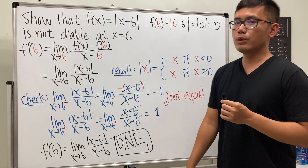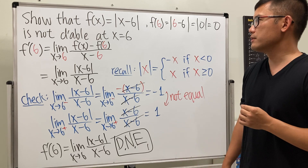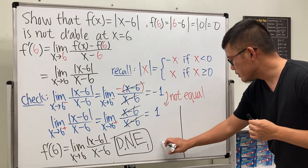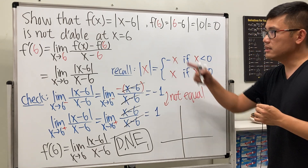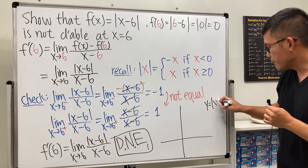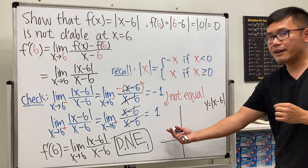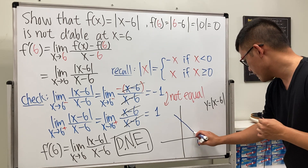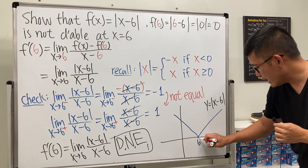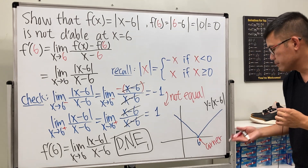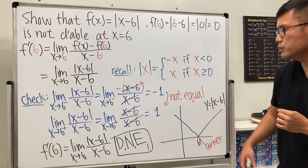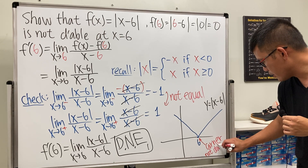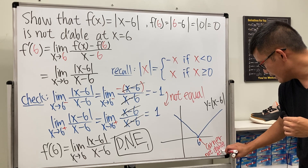Let me also show a picture of why absolute value functions aren't differentiable everywhere. The graph of absolute value of x looks like a V shape. Since we have x minus 6 inside, the graph of absolute value of x minus 6 is the same V shape shifted to the right by 6 units. At x equals 6 there is a corner, and when we have a corner the function is not smooth, meaning the function is not differentiable at x equals 6.